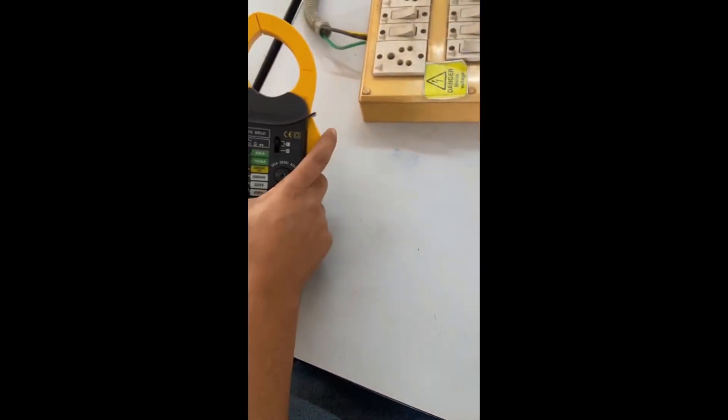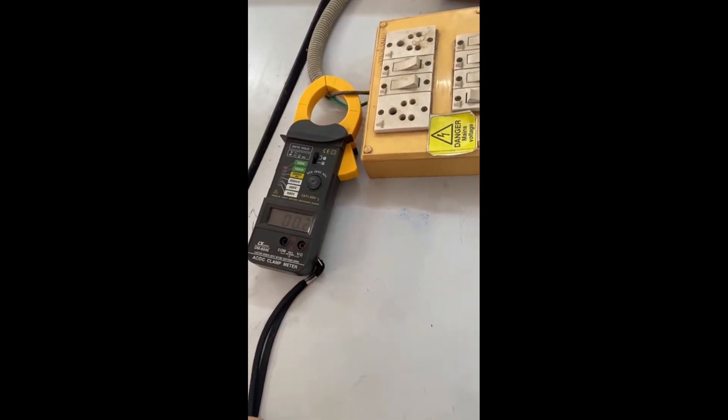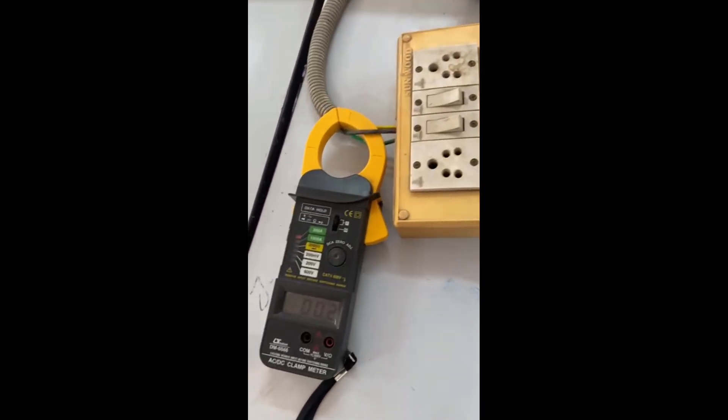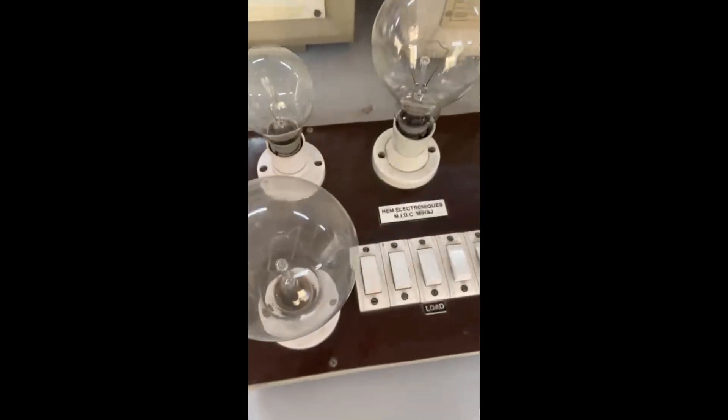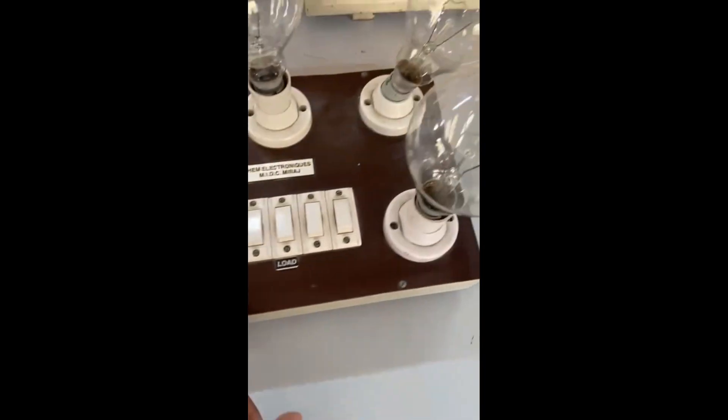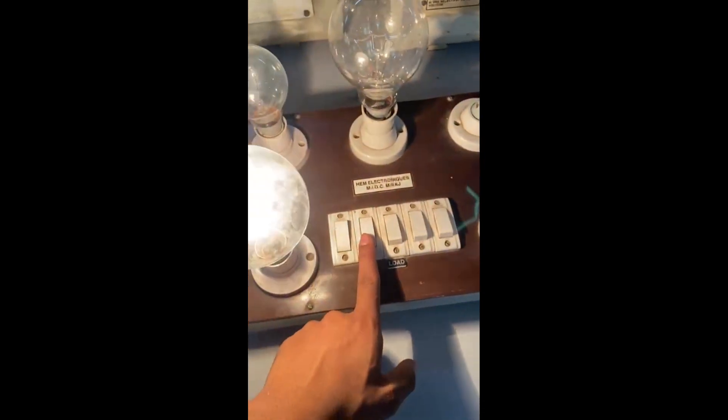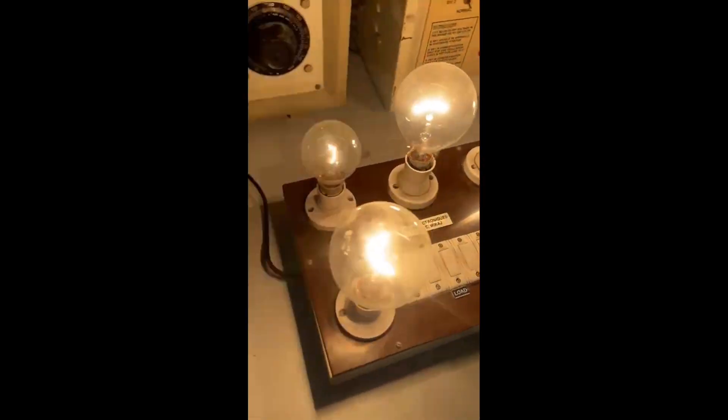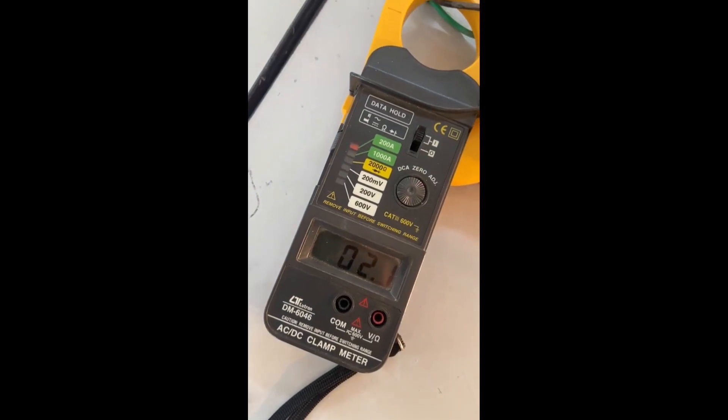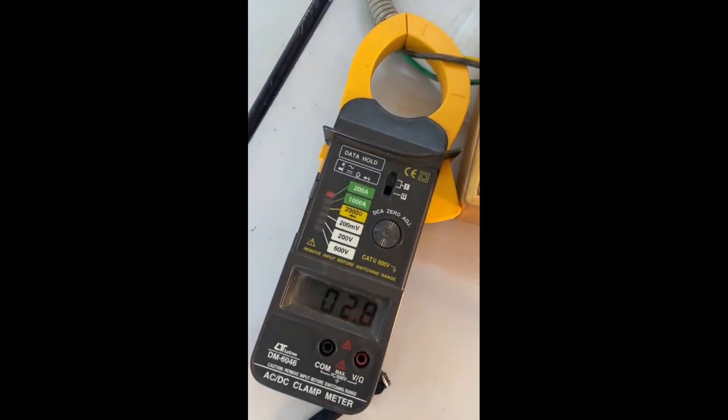Now you just have to clamp it around the wire whose current you have to measure like this. And the LCD will display the value of current that is going through that wire. We have connected a lamp load to show you the increase in current as the load is increased. We will start increasing the load. As you can see the current has increased from 0.2 to 0.7. Here is another reading to 0.1 amperes. So that's how you can measure current without indirect contact with the live wire.